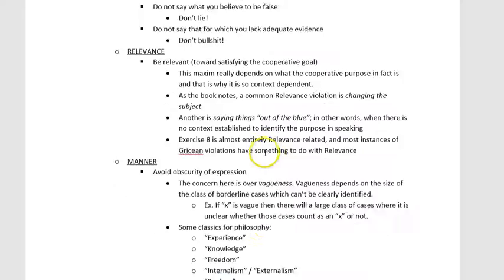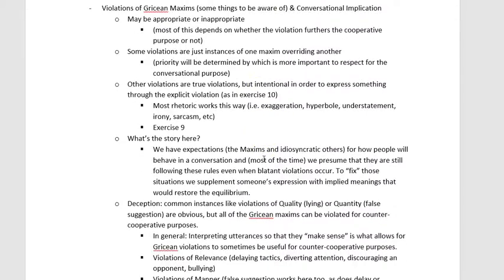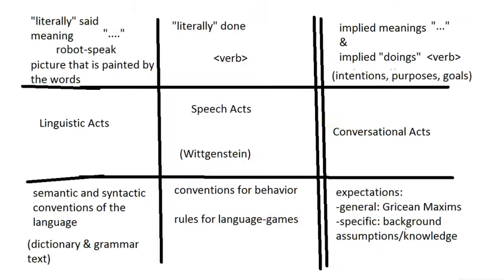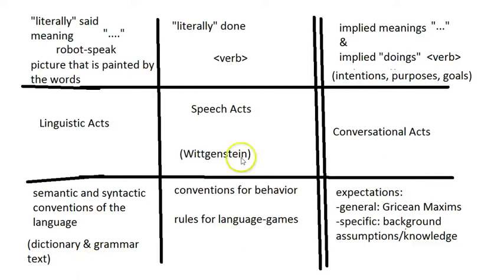It was when we were talking about violations of Gricean maxims and what kind of meaning that has for linguistic meaning — what's the significance of this and how should we understand it. Let's go back to the diagram that lays out the three different levels of meaning contributing to overall meaning when we're speaking and communicating. In the top row are quick informal reminders of what kind of meaning we're getting, and at the bottom row are notes about what's generating that meaning.